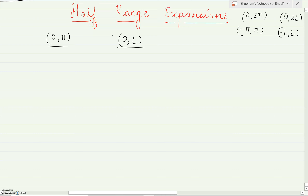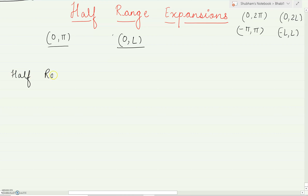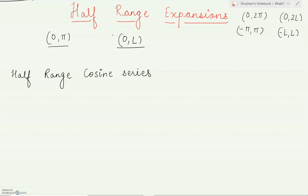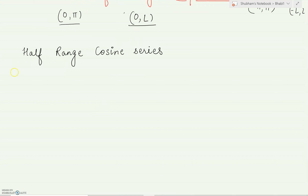When we find the Fourier expansion for half range, there are two types. First is the half range cosine series. In half range cosine series, we draw a function between zero to l on the y-axis, and then we take the reflection of that zero to l on the negative side, so that becomes the range for minus l to l. Let us see an example. For half range cosine series, there are two cases: case one is zero to l.